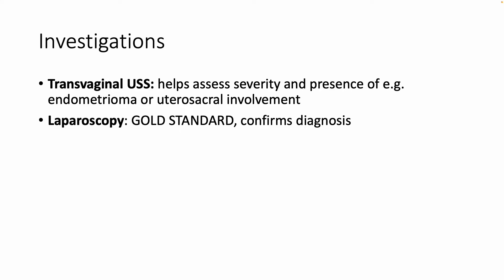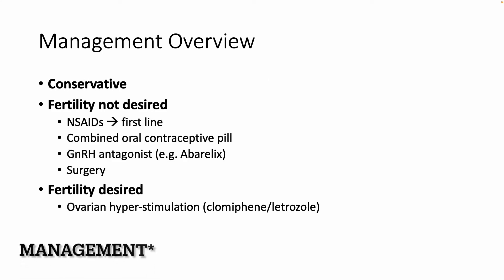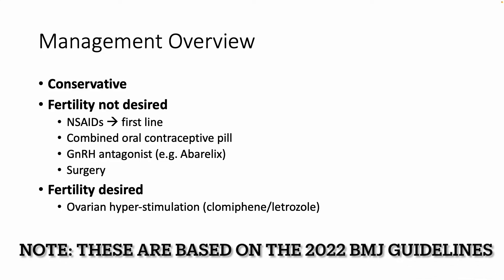After someone has been diagnosed with endometriosis, you can go down a couple of routes. A conservative route is where a patient isn't really bothered by the symptoms, so you just observe them and see how they're doing. And if a patient wants to get pregnant or have a family, you can go down the ovarian hyperstimulation route using medications such as clomiphene or letrozole, which increases the likelihood of them becoming pregnant.